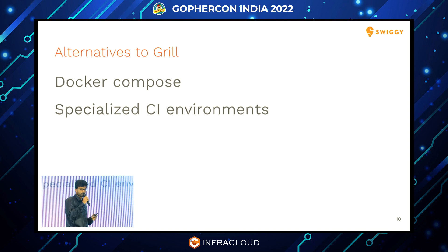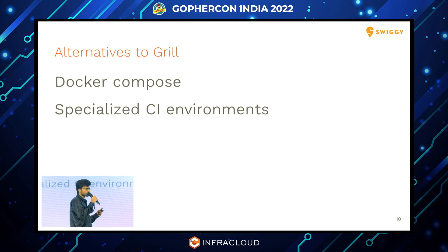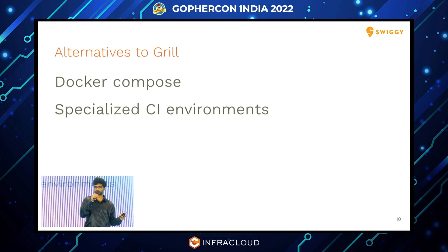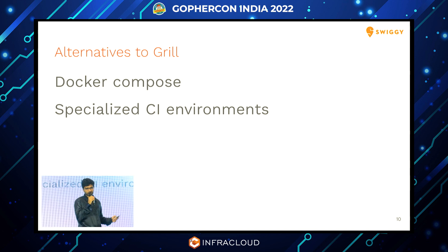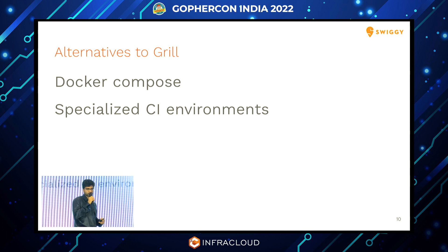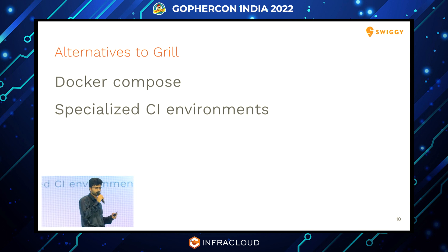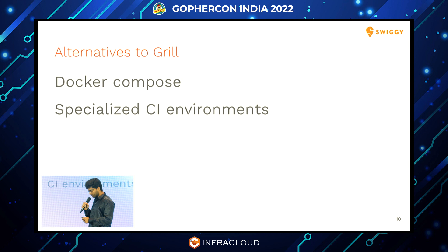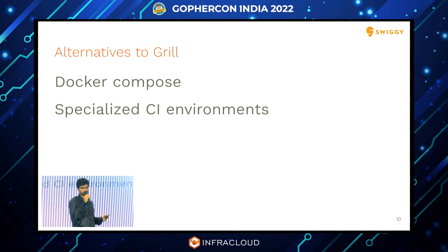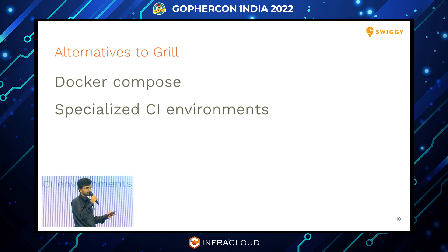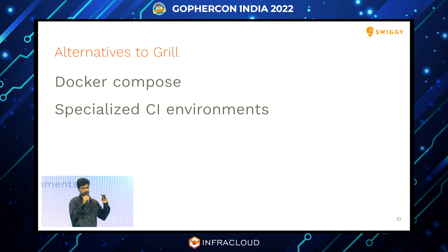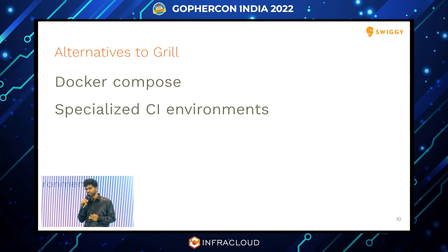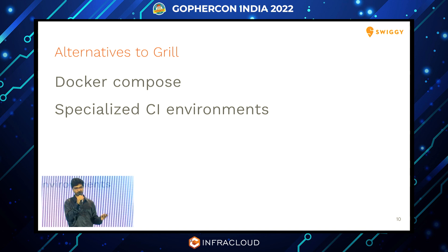We mainly had two major options before GRILL. First, we used Docker Compose — we'd have shell scripts to bring up all the required Docker containers, configure them, and then execute the tests using shell scripts again. The second approach was depending on CI environments to have these dependencies up and running so we could run the tests. But neither approach made service level tests as simple as unit tests. You still needed specialized setup knowledge, and they were also not debuggable like unit tests — you can't pick and choose one service test to run; you run the shell script and run all the test cases.